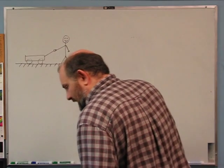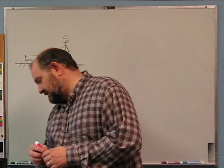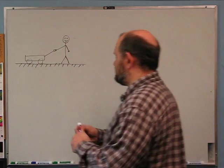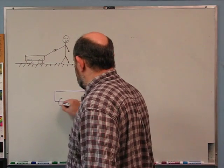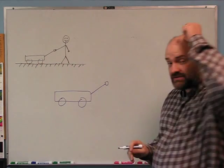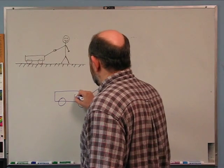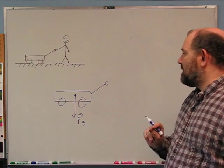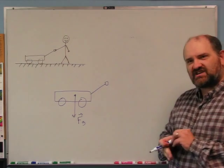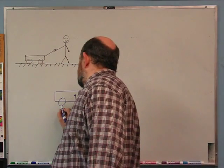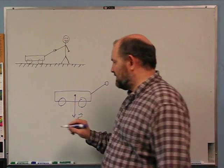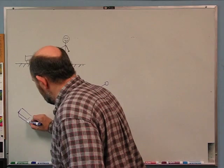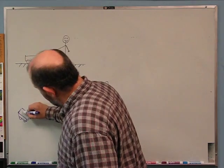Free body diagram — free means you draw them by themselves. I'm going to draw the wagon bigger. What forces are acting on the wagon? We're on Earth, so there's gravity acting at the center of mass. Next, it's sitting on the ground — there's a normal force. This is one of those cases where it's not obvious where to draw the normal force because it contacts the ground at really four points if you think in 3D — there are four wheels on the wagon.